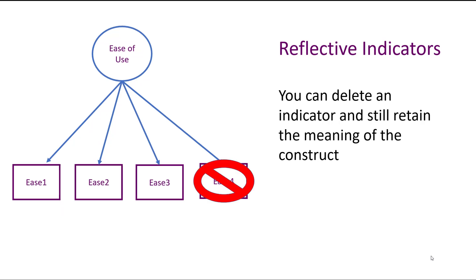Another important thing to think about with reflective indicators is the assumption that if you delete one indicator, you still retain the meaning of the unobservable construct. So if you had four ease of use items and deleted one, you're still retaining its meaning with the other three. This distinction becomes really important when we get to the difference between formative and reflective indicators.